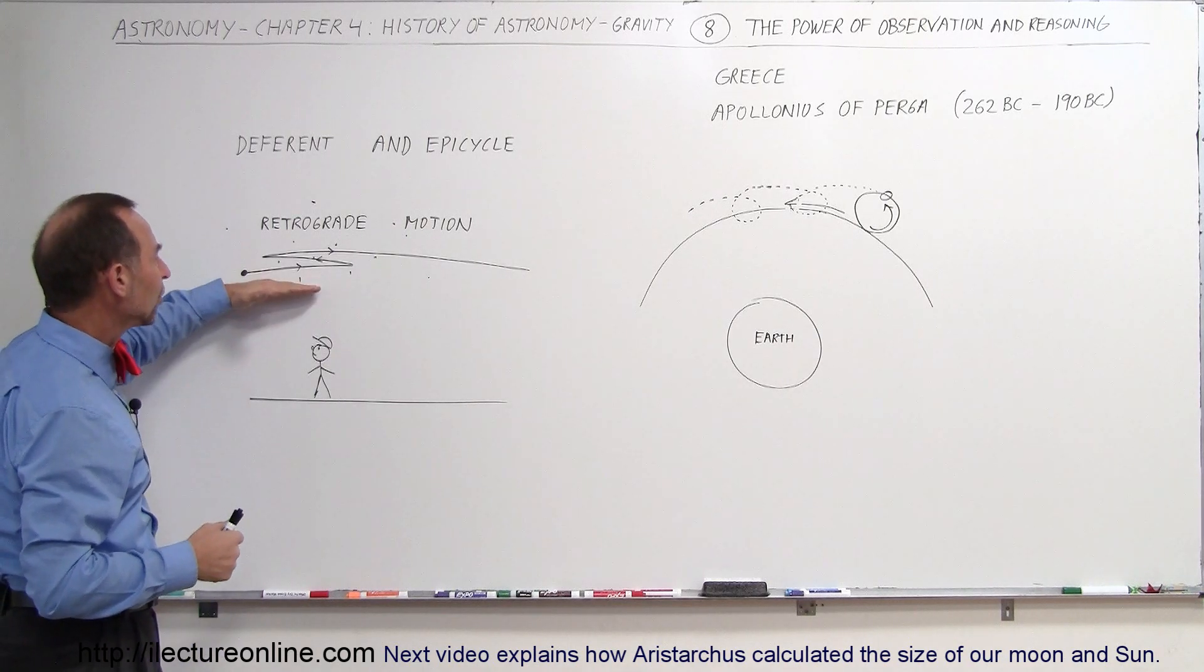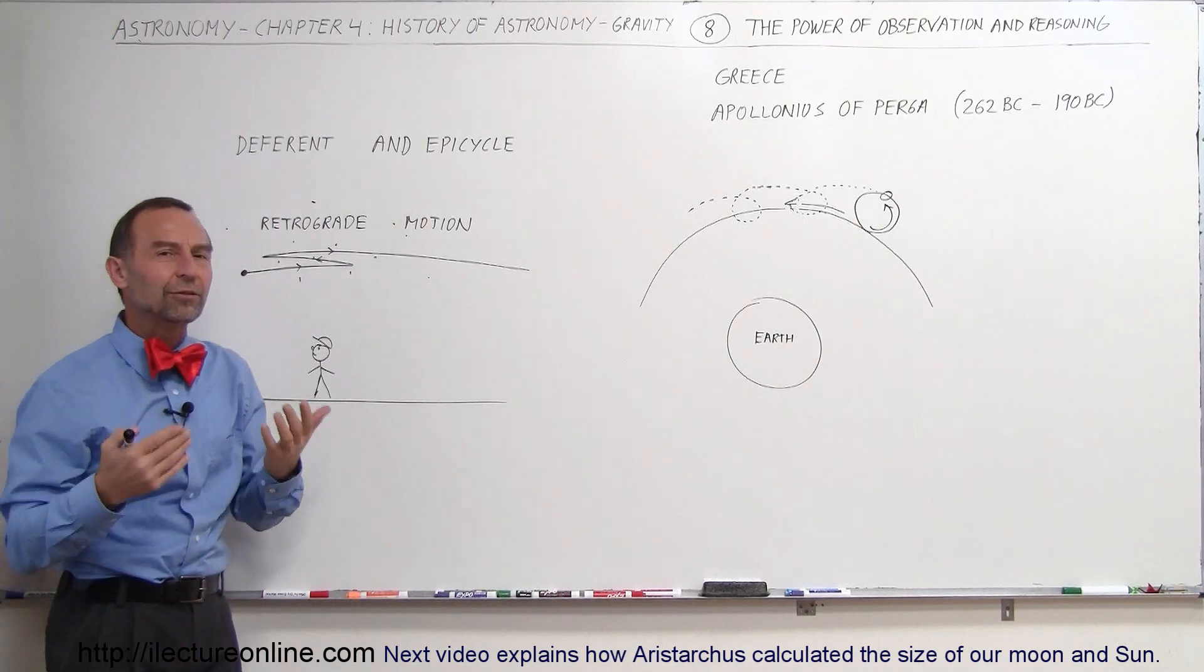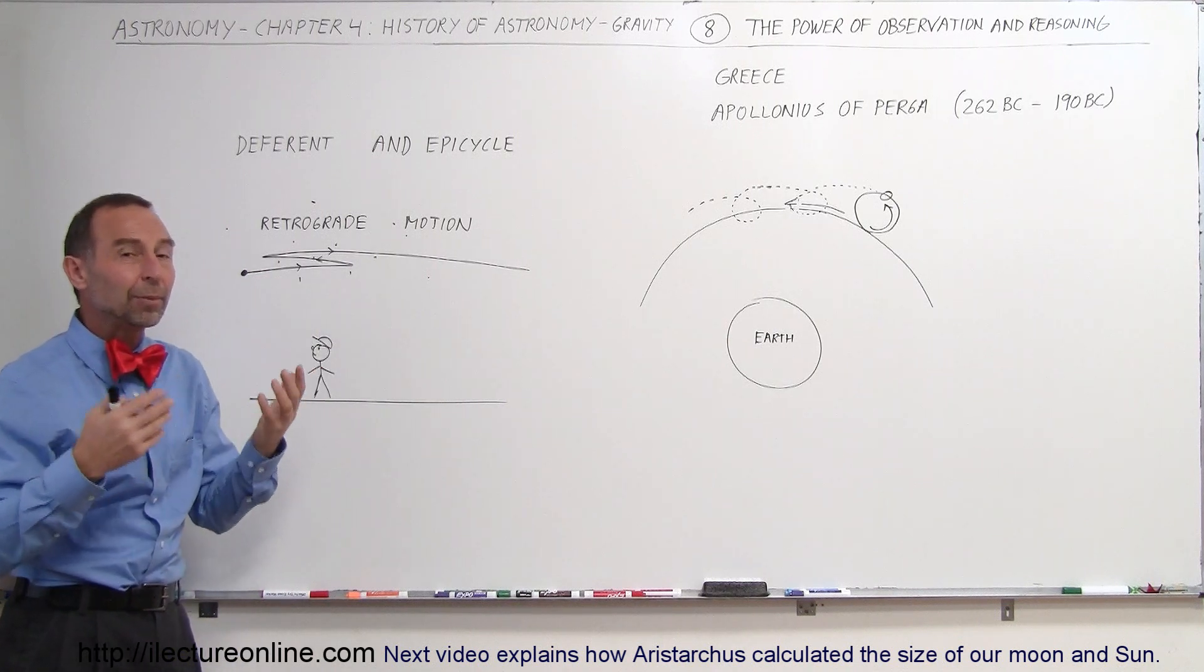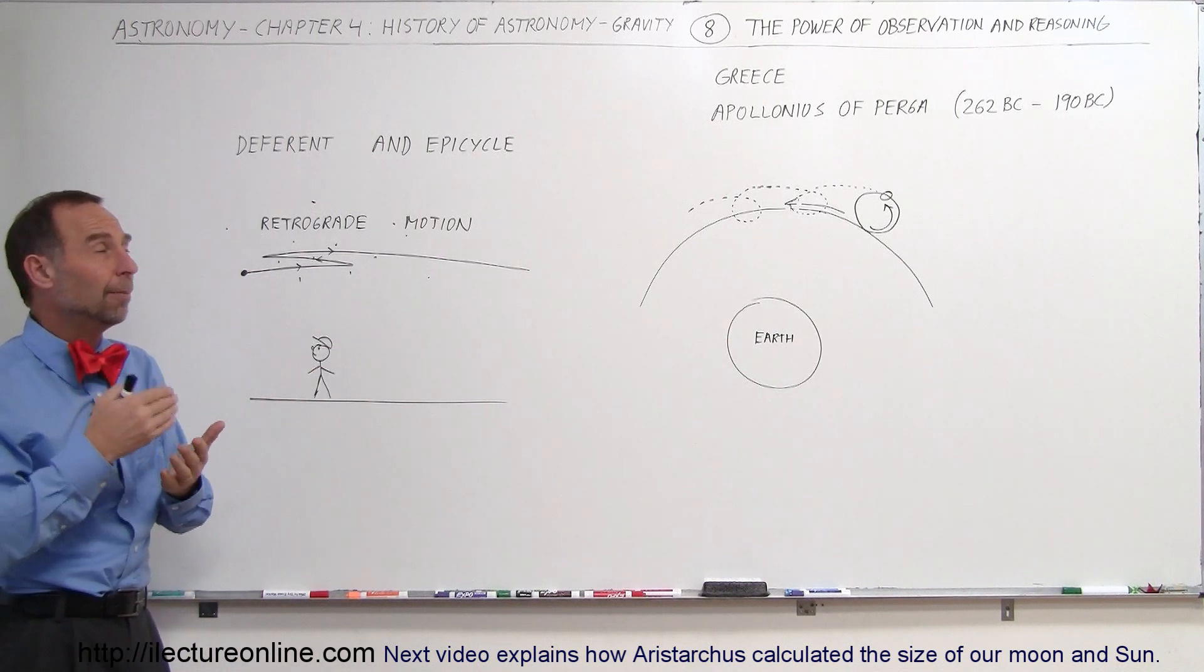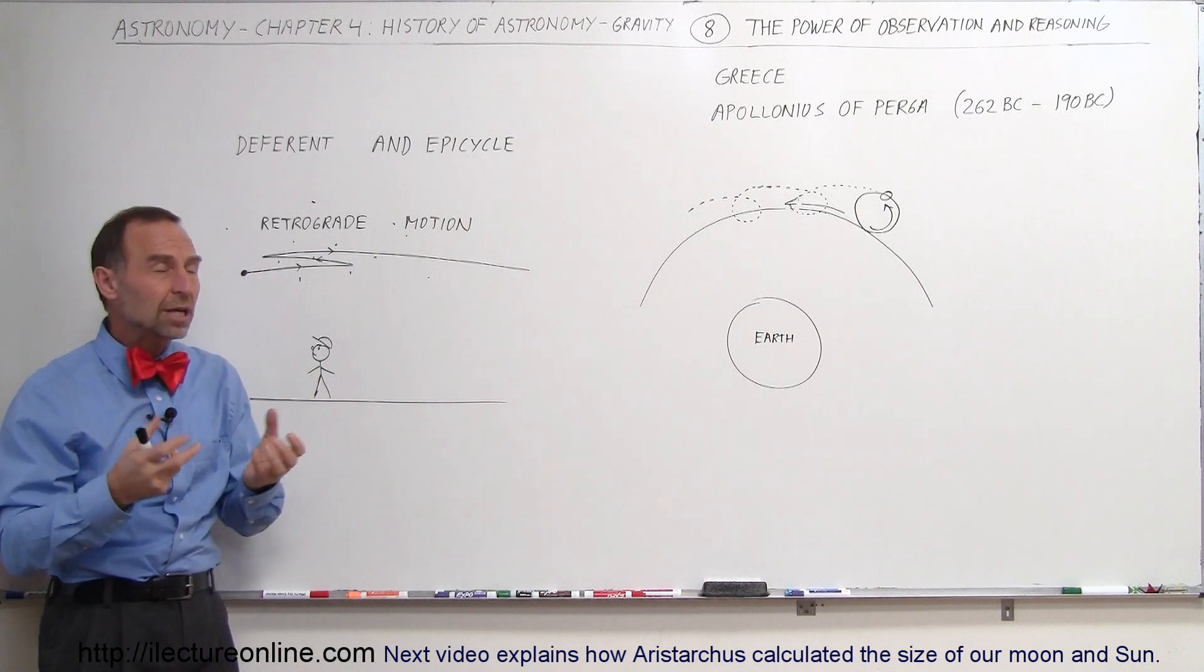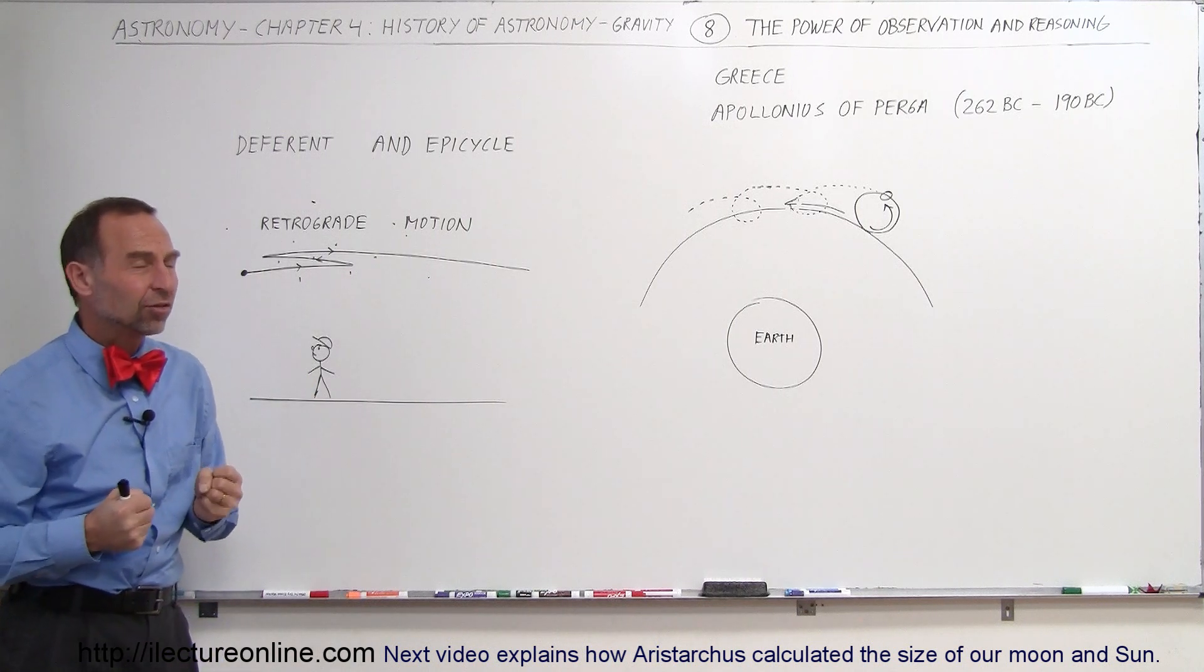We call this retrograde motion, and that was something very difficult to explain, even when people began studying mathematics and geometry and started making sense of what they were seeing in the sky.